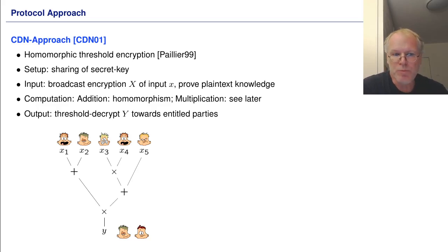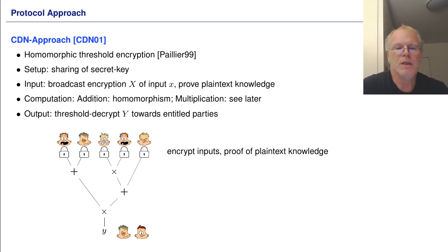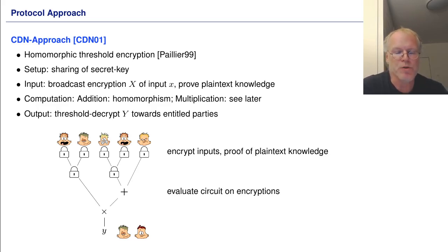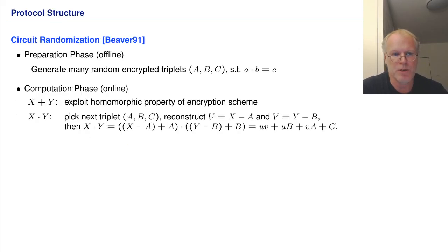In order to output, we use threshold decryption towards the entitled parties. So first each party encrypts its input and proves plaintext knowledge, then we go through the circuit — additions for free, multiplications with the protocol. Finally, we have an encryption of the output which is then threshold decrypted towards the entitled parties.